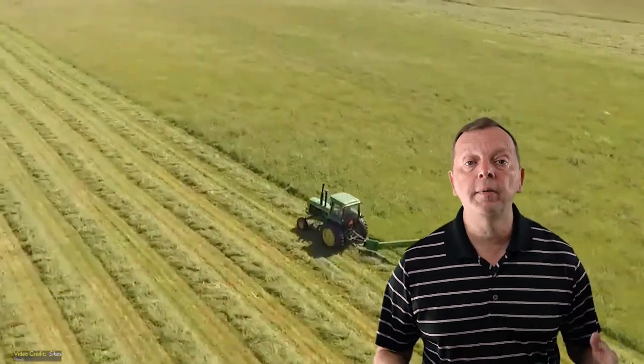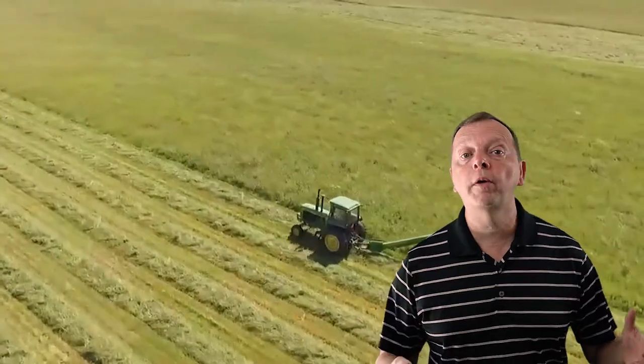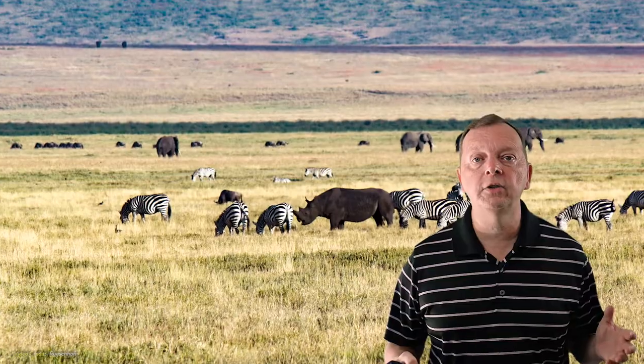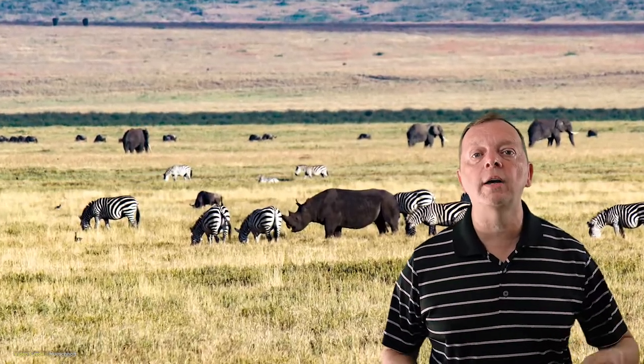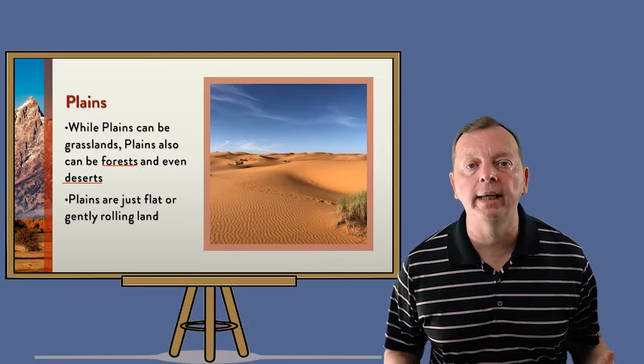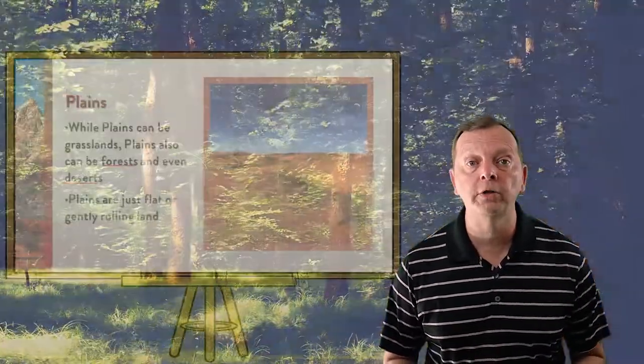For example, 80% of America's Great Plains is used for farming or for livestock. Now the Great Plains are grasslands called steppes, and the savannah in eastern Africa is also a grassland, but not all plains are grasslands. For example, the Sahara Desert is also a plain, and plains can also be the home of forests.